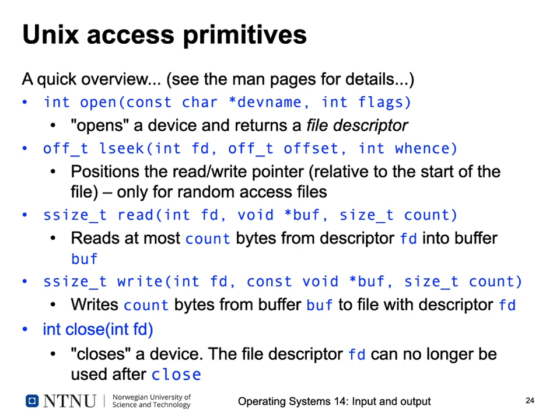When you want to position your read/write pointer on a block device like a disk, you use lseek. The L stands for long, for historical reasons — originally the call was called seek but only had a 16-bit offset parameter, so lseek now takes a long parameter. You pass the file descriptor returned by open, the offset to seek to, and a parameter called whence indicating whether the offset is relative to the start of the file or to your current position. It returns the position it was able to seek to, or an error if you seek beyond the end of the disk.